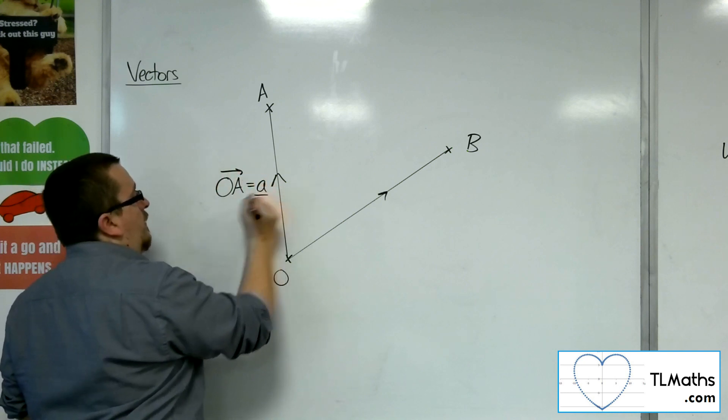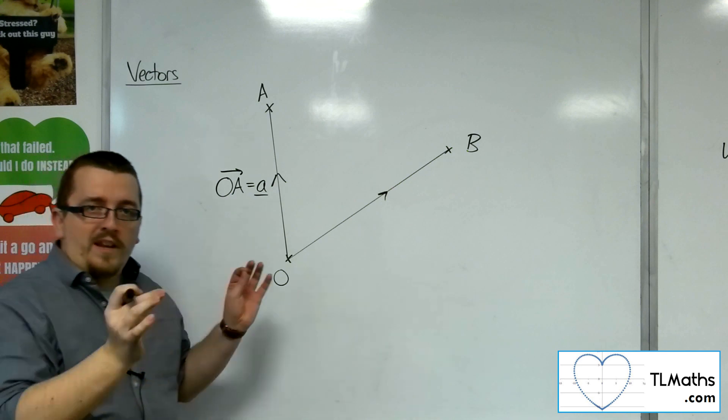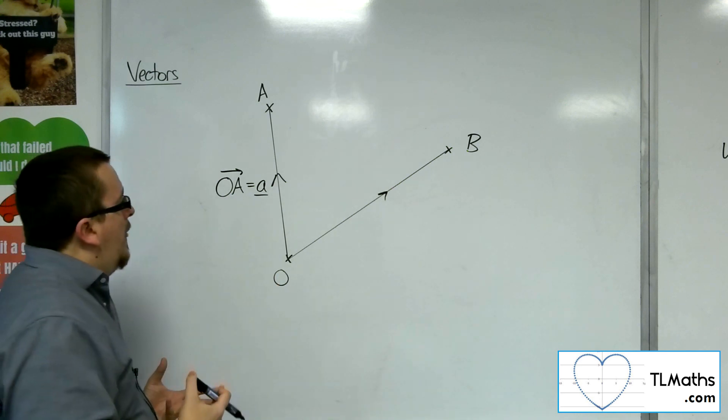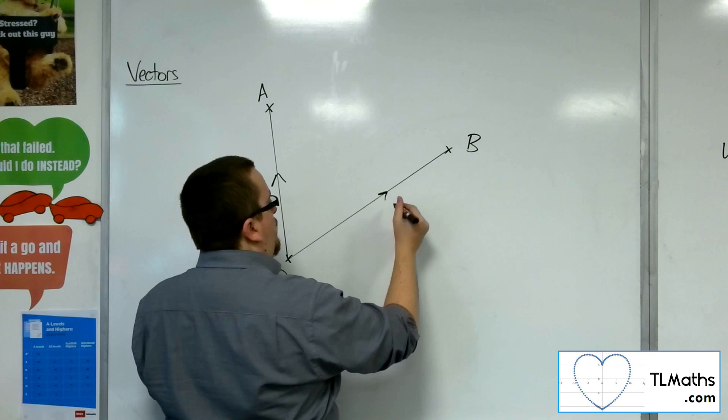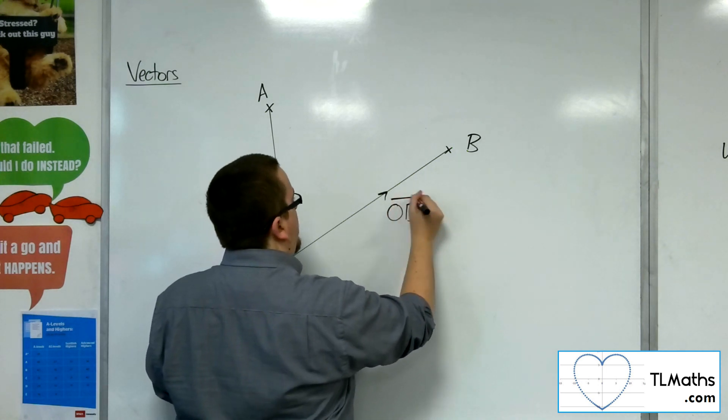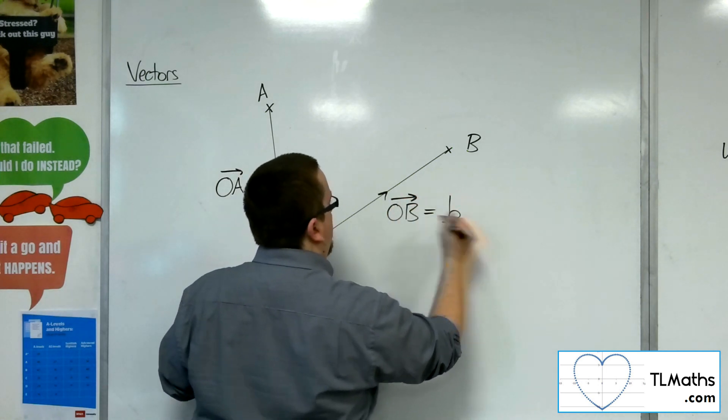And I could call that little a with an underline if I wanted to. And let's say to get from O to B, I need to travel along this vector B.